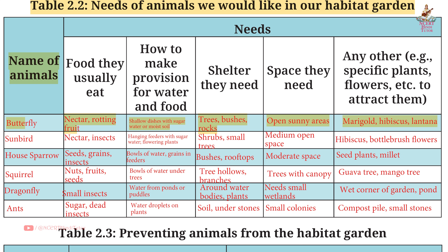Sunbird: Food — Nectar, Insects. Water/food provision — Hanging feeders with sugar water, flowering plants. Shelter — Shrubs, small trees. Space — Medium open space. Specific plants — Hibiscus, Bottlebrush flowers.